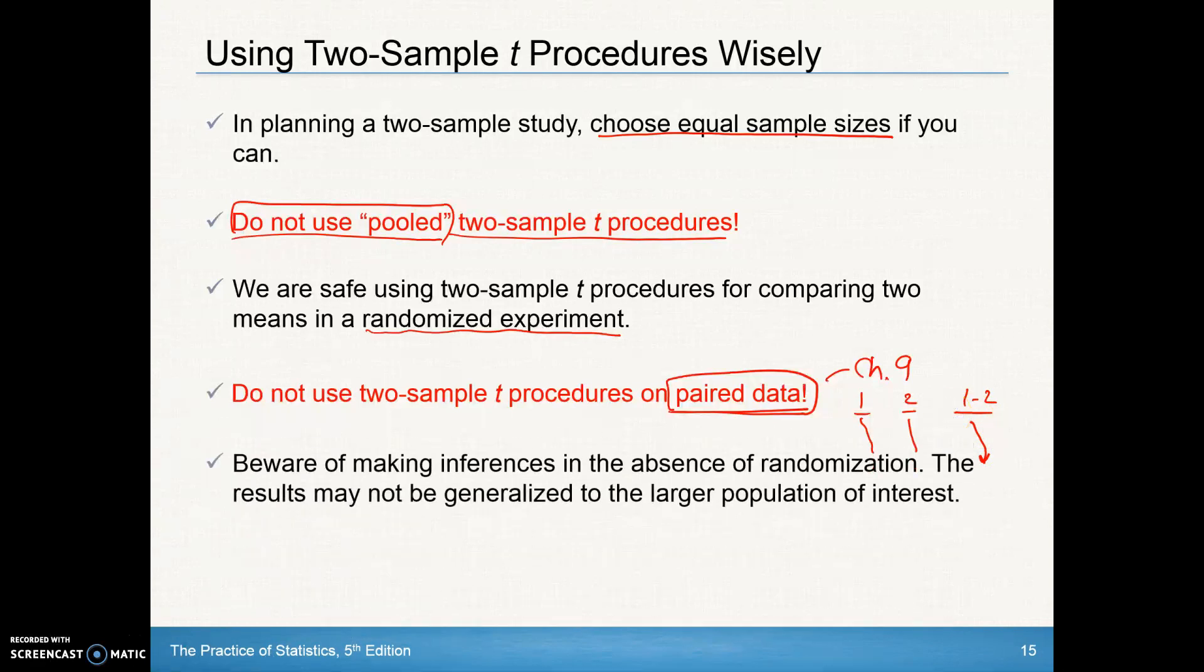Be aware of making inferences in the absence of randomization. Randomization is so key. If you can't get random selection of your subjects, make sure you have random allocation of the treatments. Just be aware if you don't have that randomization in making your inferences.